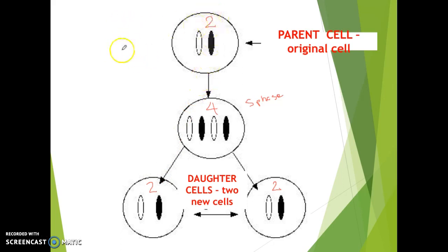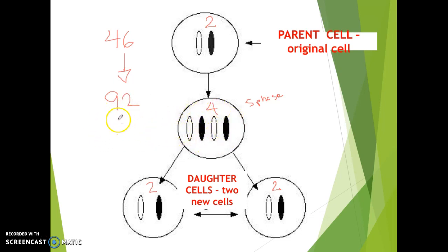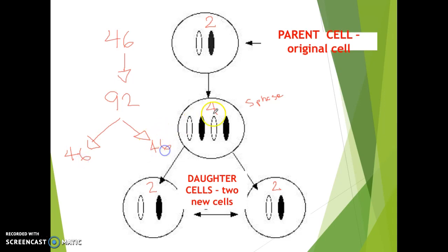In humans we have 46 total chromosomes. At one point during the S phase, we're going to have twice that number — a total of 92 chromosomes. Right after that, each of the two daughter cells, once the cell divides, will end up with exactly 46 chromosomes — what you started with. That works for every single organism depending on how many chromosomes they may have.